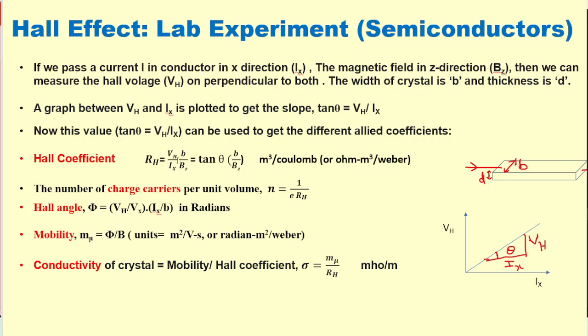First one is Hall coefficient, which is also related with Hall voltage and current: VH by IH by BZ, and VH by IH we just have calculated from this graph as tan theta B by BZ. So this is Hall coefficient. If we have calculated the Hall coefficient, then we can calculate the charge carrier density, that is n equals 1 upon e into RH. And also we can measure the Hall angle phi, that is VH by VX, and VX by B in radians. Then we can also find out the mobility and conductivity. Mobility is phi divided by the magnetic field B, and similarly the conductivity we can find out when mobility is divided by the Hall coefficient.